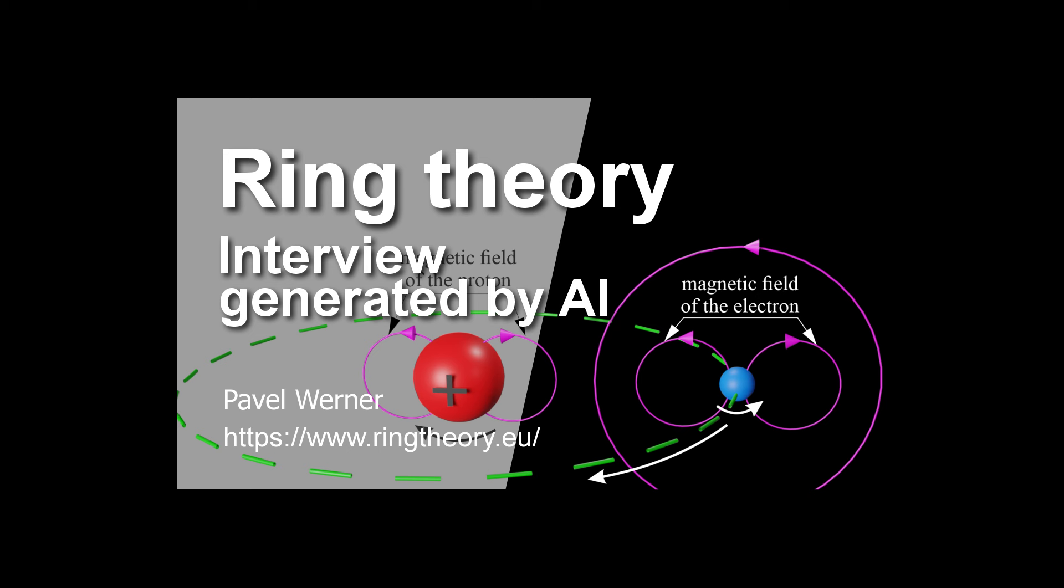But are they really mutually exclusive? Could there be a way to reconcile these two models? That's a fantastic question, and one that physicists are actively debating right now. Some see ring theory as a complete replacement for quantum mechanics, while others believe that it could be integrated into the existing framework of quantum theory, offering a new perspective on some of its most puzzling aspects. So it's not necessarily a case of one being right and the other being wrong, but more about finding the connections and commonalities between these different models. Precisely. Perhaps by combining the insights of ring theory with the mathematical tools of quantum mechanics, we can unlock an even deeper understanding of the universe. It's like those two models are like different pieces of the same puzzle, and it's up to us to figure how they fit together.